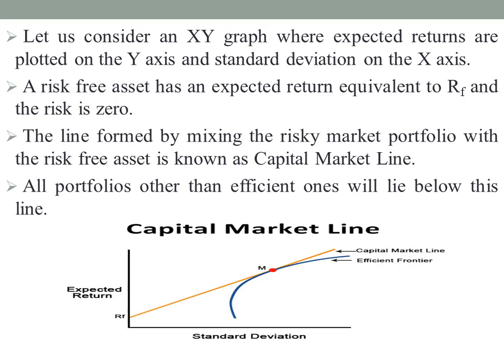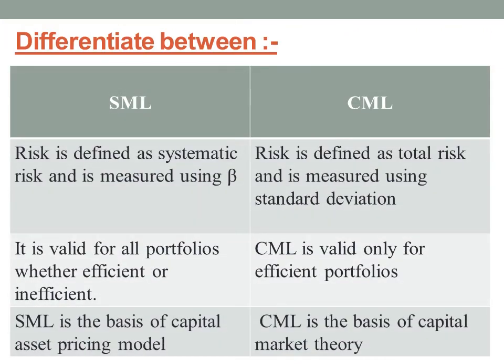Next we will look into some of the main differences between SML and CML. Under SML, risk is defined as systematic risk and is measured using beta. Whereas in CML, risk is defined as the total risk and is measured using standard deviation. SML is valid for all portfolios whether efficient or inefficient, whereas CML is valid only for efficient portfolios.